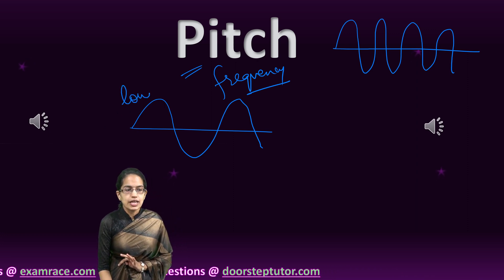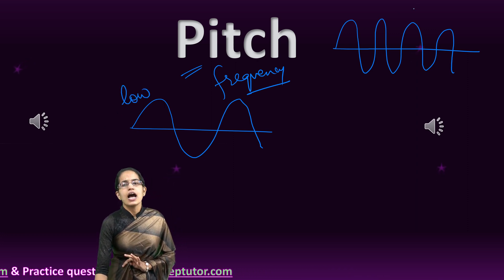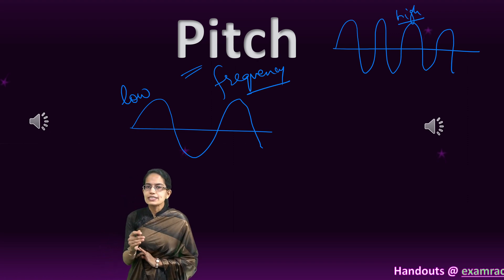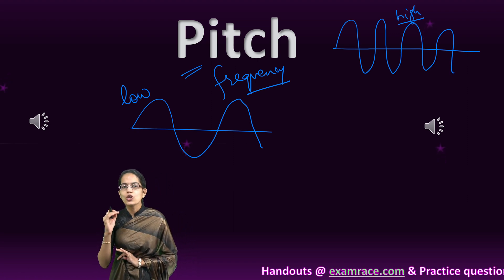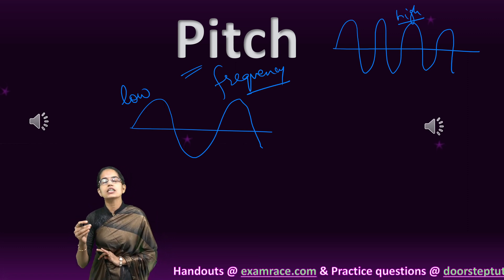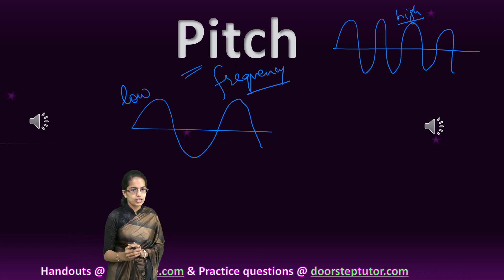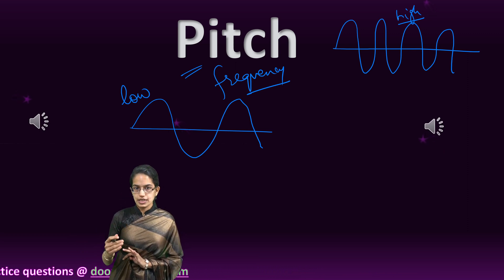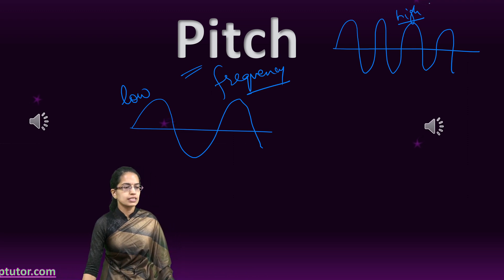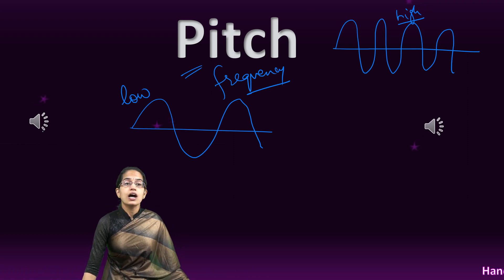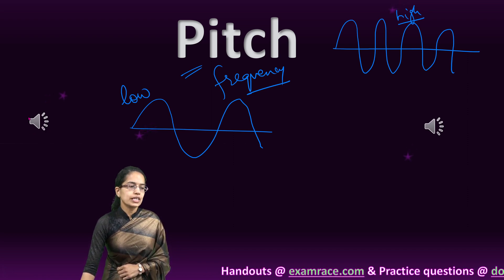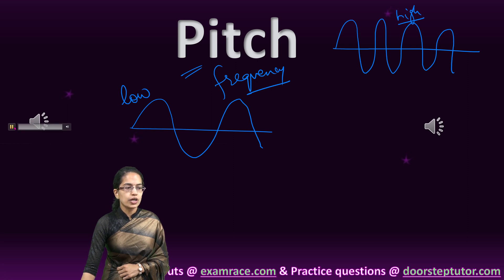When you have lesser waves that pass, it is low pitch. However, if you have a higher number of waves that pass, it would be considered a high pitch sound. Note that pitch is a listener's perspective — it's not an objective physical property of the sound. A low pitch sound is relatively subtle, in contrast to a high pitch sound which has a shrill quality.